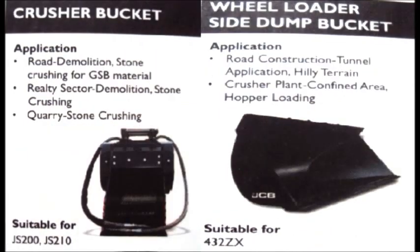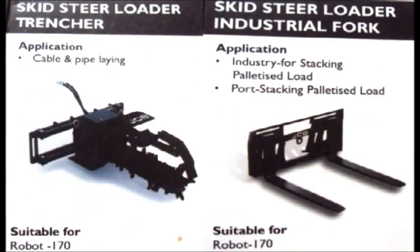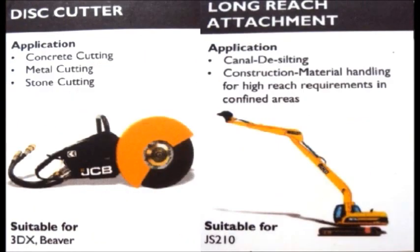Let's look at different types of attachments used in construction equipment. The disc cutter is used for concrete cutting, metal cutting, and stone cutting, and is used in backhoe loader machines. The long reach attachment is used for canal desilting, construction, and material handling.